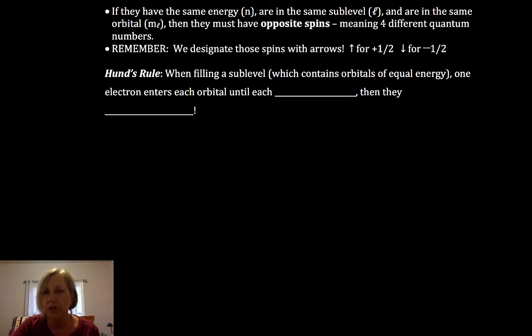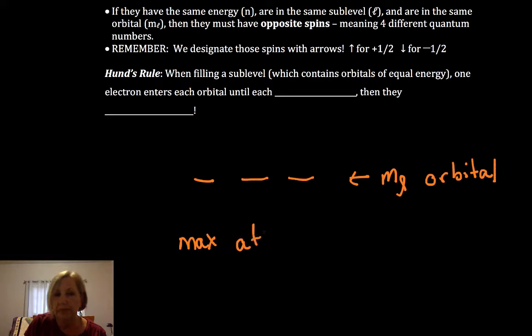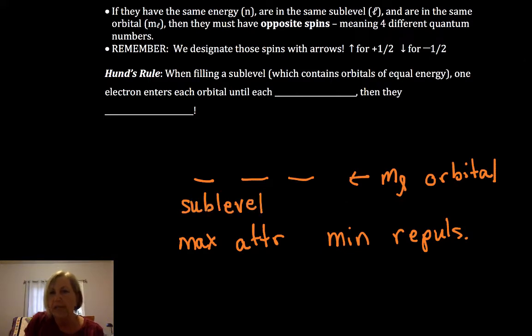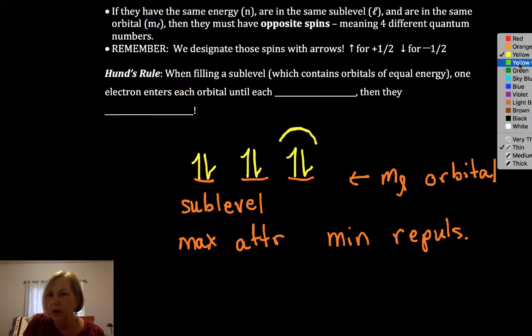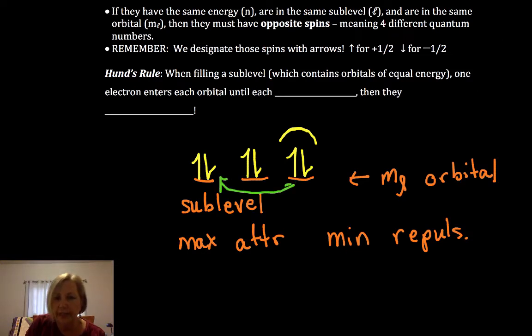And then lastly, we have Hund's rule. Now remember, what we're going to do is we're going to be for an orbital diagram, depicting orbitals as lines. So each line represents an M sub L or an orbital. Now we want to always maximize attraction and we want to minimize repulsion. And so what Hund's rule says is once we have a single sublevel within that sublevel, we're going to put the electrons in unpaired spins up first before we pair them. That minimizes repulsion because two electrons in one orbital have greater repulsion than if these two, which would be in different orbitals.